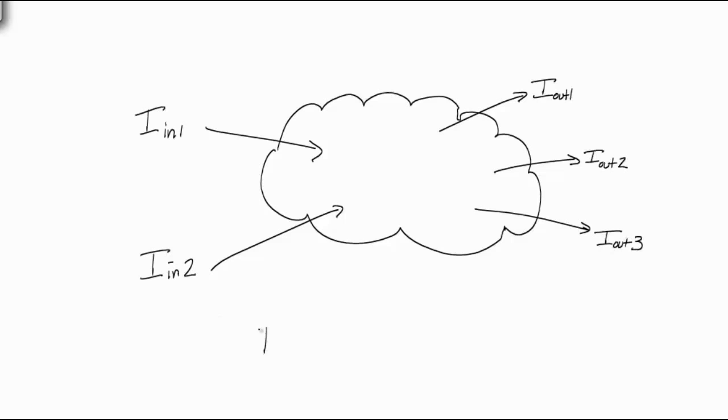So if I were to draw an arbitrary boundary with two currents entering it, say IN1 and IN2, then the currents leaving it, say Iout1, Iout2, and Iout3, must equal the input currents. Or mathematically, IN1 plus IN2 equals Iout1 plus Iout2 plus Iout3.